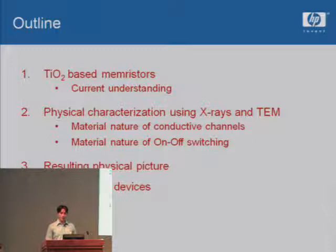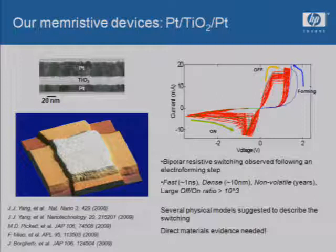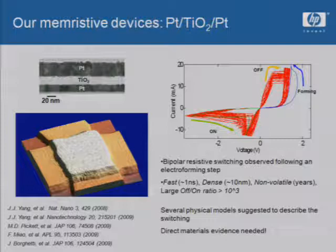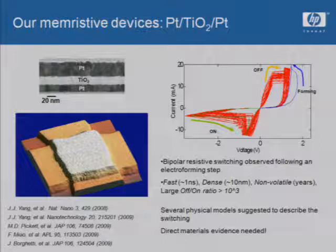Here are our devices — a cross-section TEM of the platinum/titanium dioxide/platinum devices and an AFM of the crossbar device. There are a number of publications from our group using these titanium dioxide-based devices. Electrically, we see very nice bipolar resistive switching behavior following an electroforming step. We have very fast switching, it's scalable to very small dimensions with high density, it's non-volatile, and we have a very large on-off ratio.